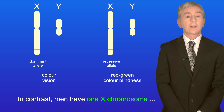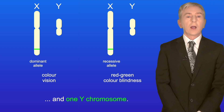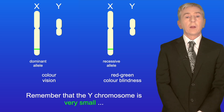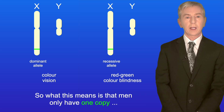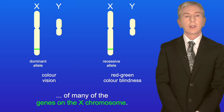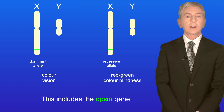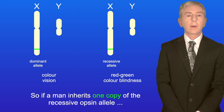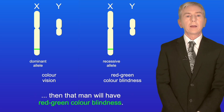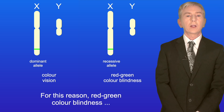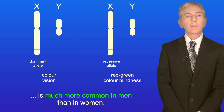In contrast, men have one X chromosome and one Y chromosome. The Y chromosome is very small and only contains a small number of the genes present on the X chromosome. So men only have one copy of many of the genes on the X chromosome, including the Opsin gene. If a man inherits one copy of the recessive Opsin allele, then that man will have red-green colour blindness. For this reason, red-green colour blindness is much more common in men than in women.